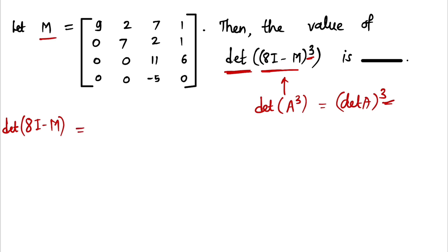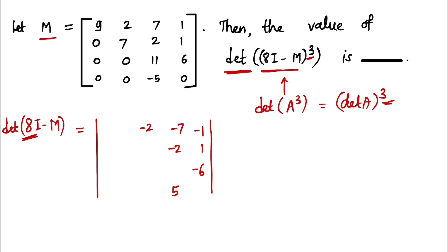To find 8I minus M, we take minus M first: minus 2, minus 7, minus 1, then minus 2, 1, minus 6. Then we add 8 times I, so we add 8 on the diagonal entries. That gives us: 8 minus 9 is minus 1, 8 minus 7 is 1, then zeros, 8 minus 11 is minus 3, and 8 minus 0 is 8. So here we have a 4 by 4 matrix.